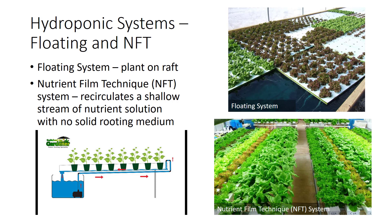In the nutrient film technique, the plant is supported above the trough in rock wool or another material, and the roots are placed in troughs with a shallow stream of circulating nutrient solution. The main tank is located at the lowest point of the setup, containing nutrient solution that is pumped up to the ends of the trough. The solution then flows down a 1% slope back to the main tank, where it is recirculated. The plants produce a root mat, part of which is above the nutrient solution, while the lower part is submerged and bathed in the circulating solution.